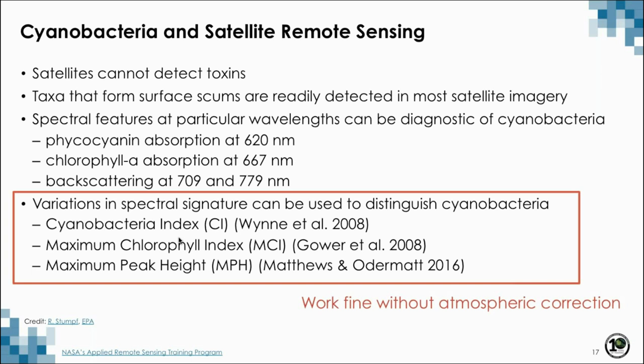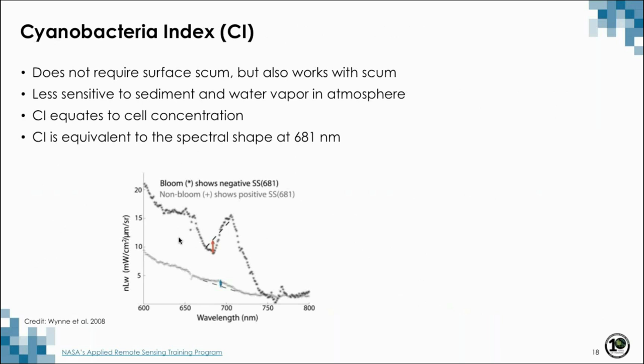The algorithm commonly used in the US and Europe is the cyanobacteria index, or CI. It was developed for the European Space Agency's MERIS sensor and is currently used with the Sentinel-3 sensor, adapted also for MODIS. The cyanobacteria index does not require surface scum but can work with it, and it is less sensitive to sediment and water vapor in the atmosphere. Sediment, water vapor, and aerosols more strongly affect the spectrum in the blue to green part of the visible spectrum — about 400 to 600 nanometers — whereas the algorithm uses values at around 681 nanometers, which does not compete with sediments, water vapor, or aerosols.